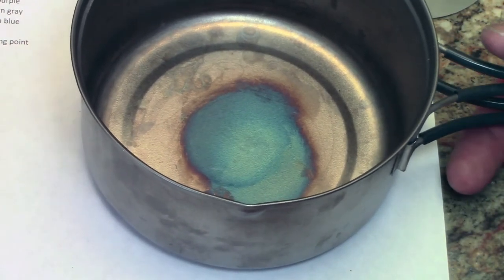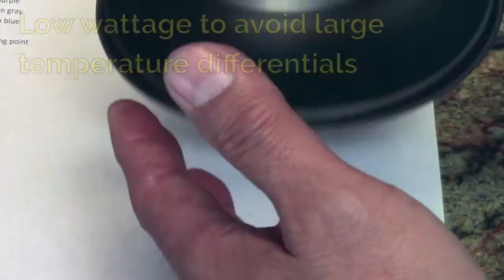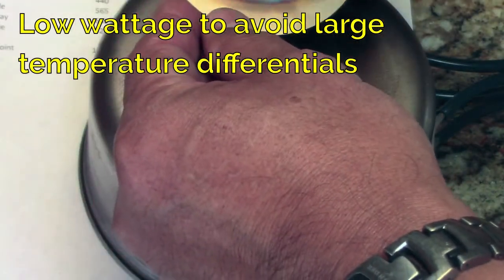So the reason why our stoves we design ourselves to burn so long and slow is so you don't get high temperature differentiation and you don't get this oil canning of your stove.